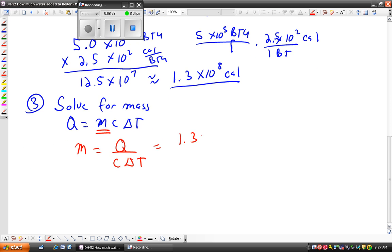1.3 times 10 to the eighth calories over the C, which was 1 degree Celsius per gram times the change in temperature, which was 44, or I'll actually write it as 4.4 times 10 to the 1 degrees Celsius.